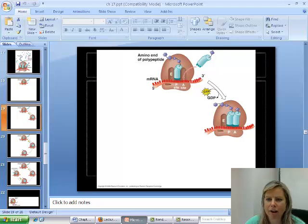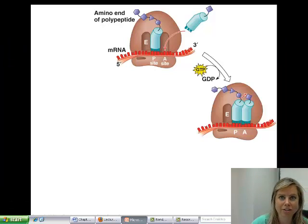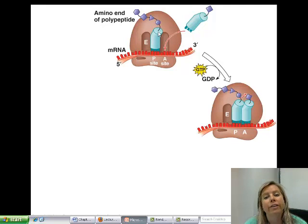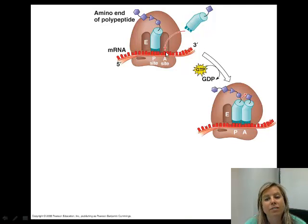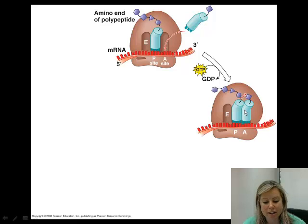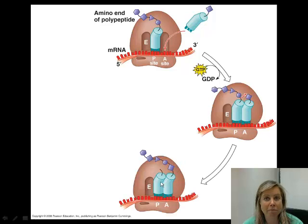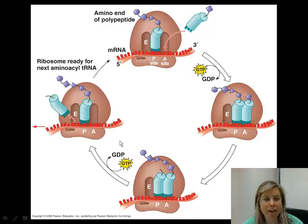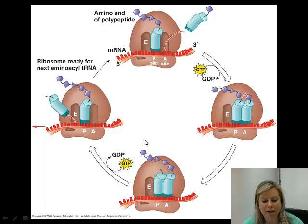Remember how we were talking about the translation process — you've got your tRNA, another one clicks in next to it. The ribosome is going to create a chemical reaction that makes the chain that's been growing on the first one pop over onto the second one. That's going to leave the first one empty. Everything shifts over on the ribosome, and then the empty one exits.